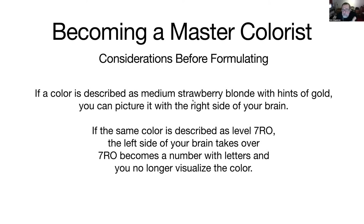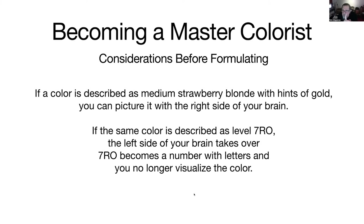If I describe a color as medium strawberry blonde with hints of gold, you can picture it. But if I describe the same color as a 7-RO — medium blonde, reddish, orange — the left side of your brain takes over and 7-RO becomes a number with letters. You no longer visualize the color. As soon as you switch to a number, you can no longer see it — it's just a number.